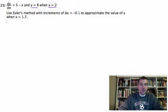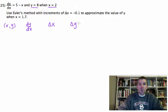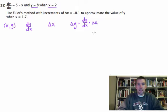So here's how we need to set this up. We need our point x, y. We need to know what dy/dx is equal to. We need to know what delta x is equal to. We need to know what delta y is going to be. Now delta y, remember we're going to treat this like a fraction.